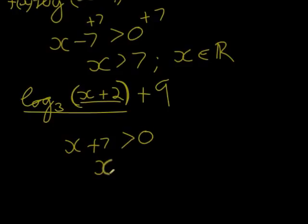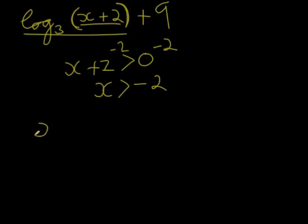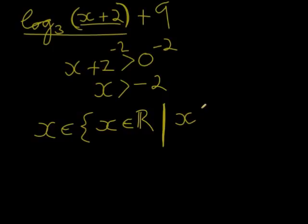Which means that to solve it, sorry, it's not plus 7, plus 2. I subtract a 2 on both sides, and therefore I get that x is larger than negative 2. So if I write that in set notation, I say, well, x is an element of the set. First of all, the biggest condition is that x must be a real number, any real number we can use, but the stricter conditions now follow: x must be larger than negative 2. That is another way of writing this domain.